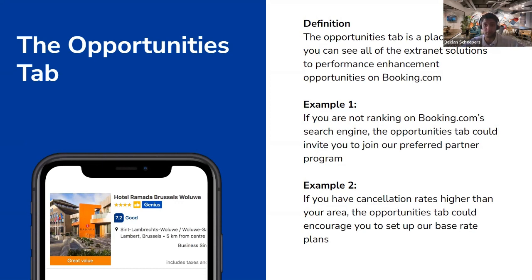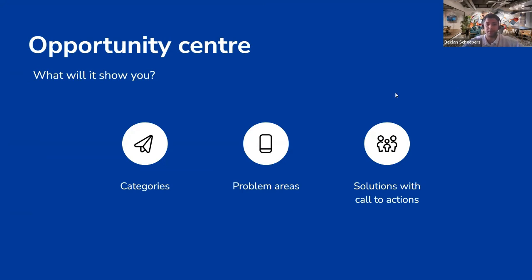For example two, if you have cancellation rates higher than your area average, the Opportunities tab could encourage you to set up our base rate plans — these are non-refundable and fully flexible rate plans which help reduce your cancellations. In the Opportunity Center you will have three sets of information: your categories, your problem areas, and your solutions with call to actions. All solutions provided will have a call to action button that takes you directly to the actionable solution.